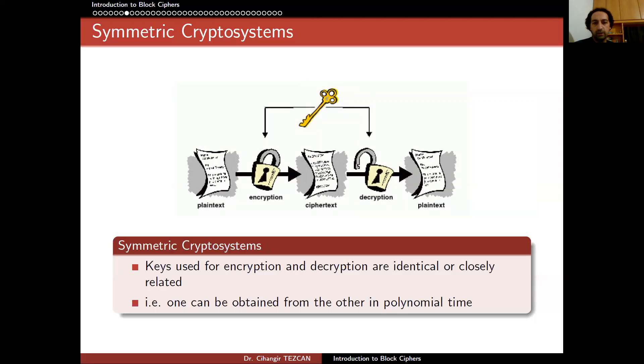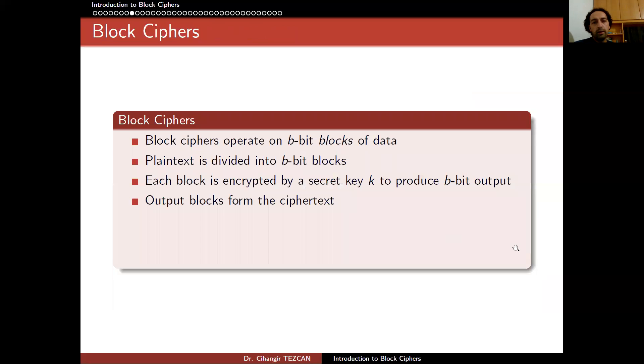But for this lecture, we are going to be talking about symmetric cryptosystems. So we have a single secret key. Block ciphers are one of the encryption primitives of symmetric key encryption algorithms. So block ciphers operate on b-bit blocks of data. Plaintext is divided into b-bit blocks. Each block is encrypted by a secret key k to produce b-bit output. Output blocks form the ciphertext.